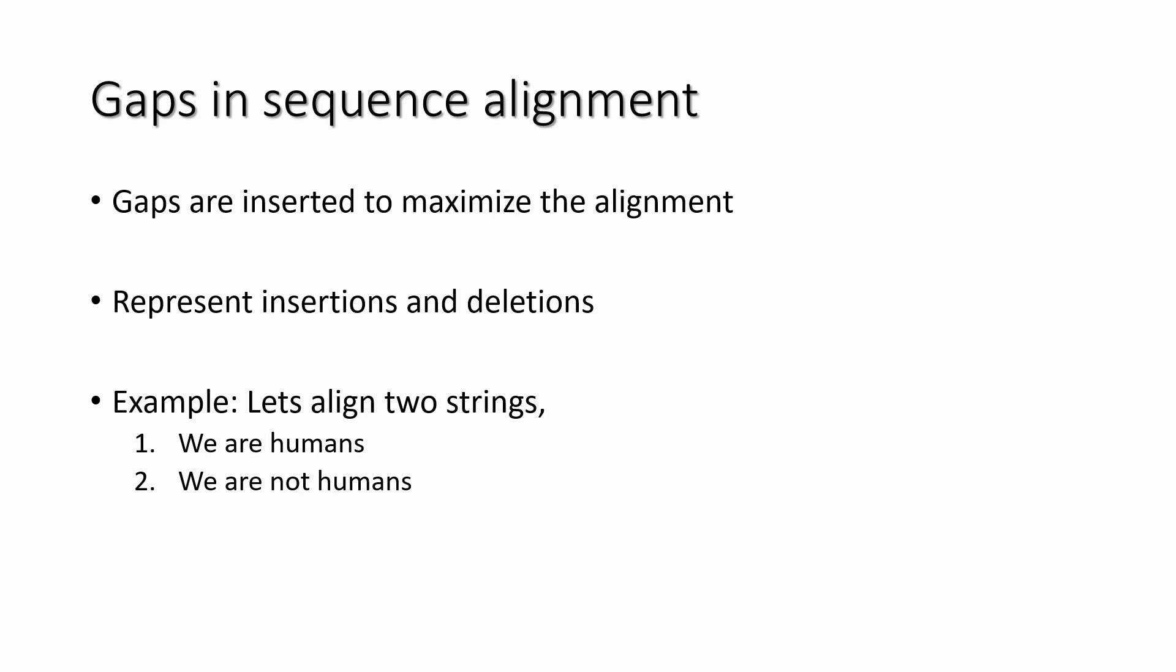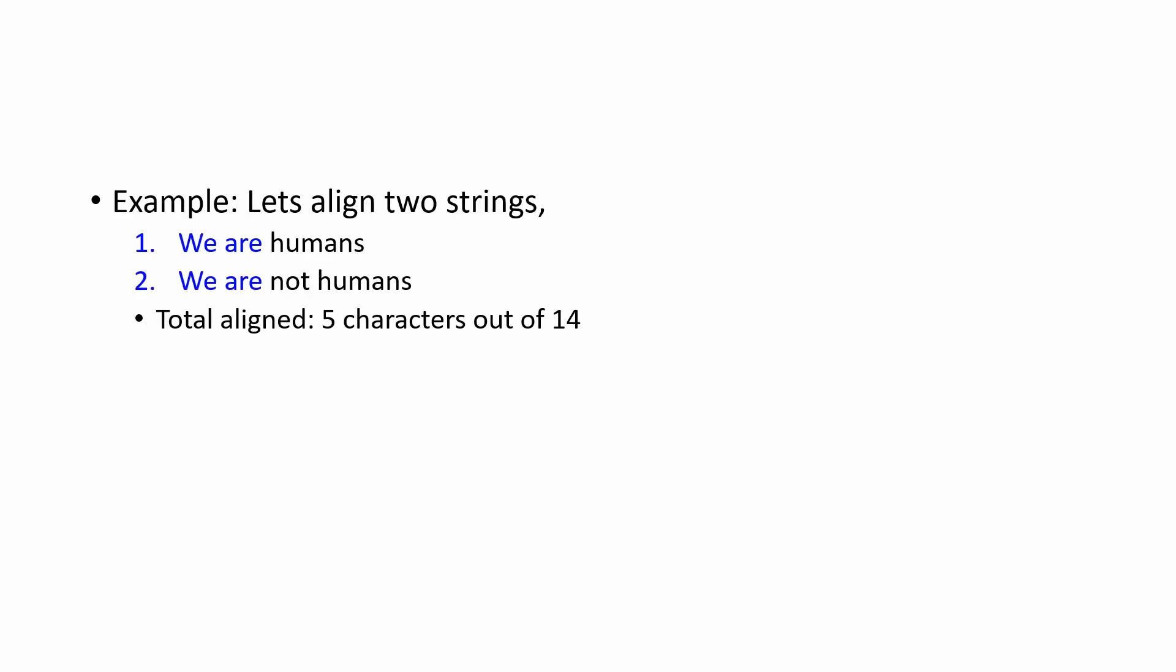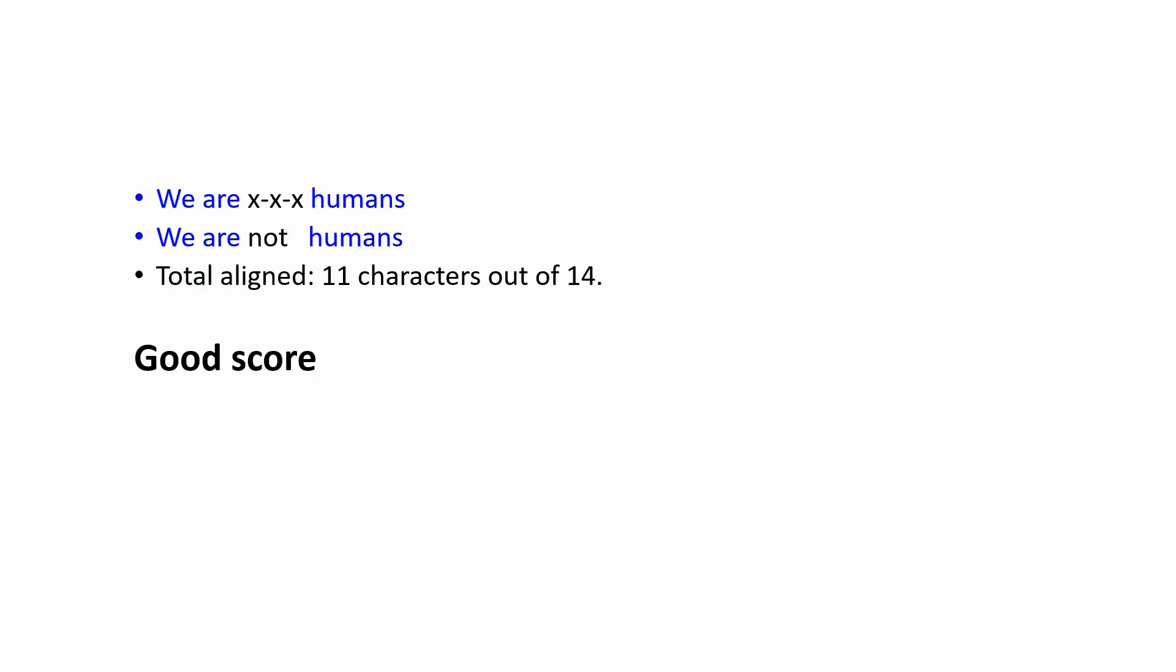Gaps in sequence alignment: gaps are inserted to maximize the alignment and represent insertions and deletions. Let's align two strings: "we are humans" and "we are not humans." Total aligned five characters out of 14. Can we insert some gaps in one sequence so as to maximize the alignment? That is a good score. If we insert three gaps, total aligned characters are 11 out of 14.